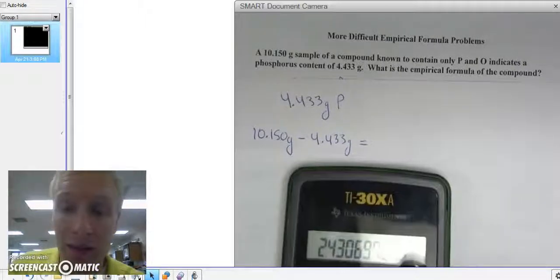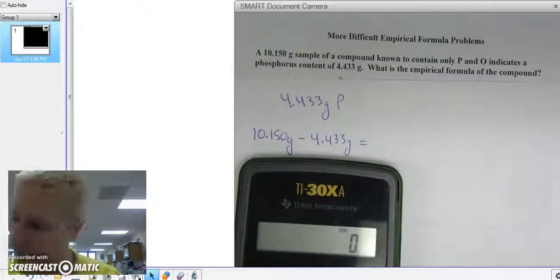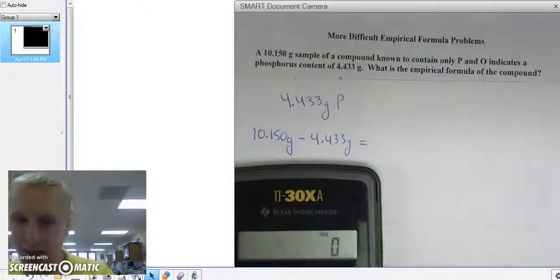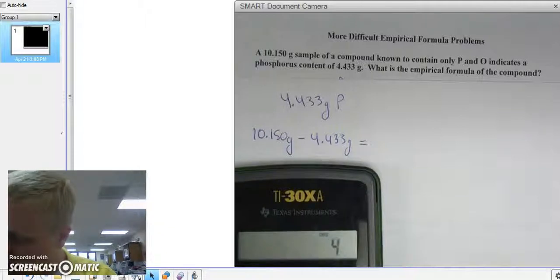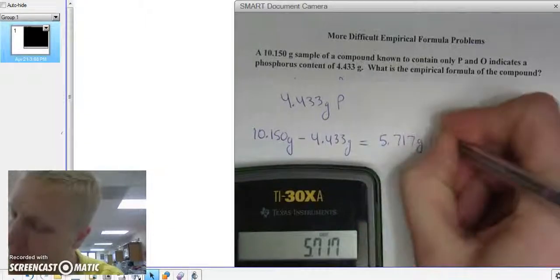Good thing I have my calculator, which every chemistry student needs to be successful in chemistry. 10.15 minus 4.433 gives me 5.717 grams of oxygen.